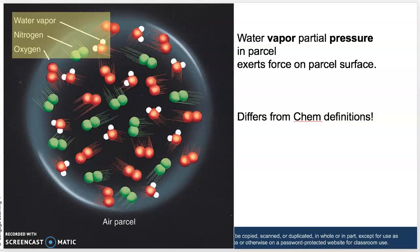Our previous videos talked about vapor pressure and the different types of vapor pressure — actual vapor pressure and saturation vapor pressure. Just to review briefly, vapor pressure is a partial pressure that is a component of total air pressure.